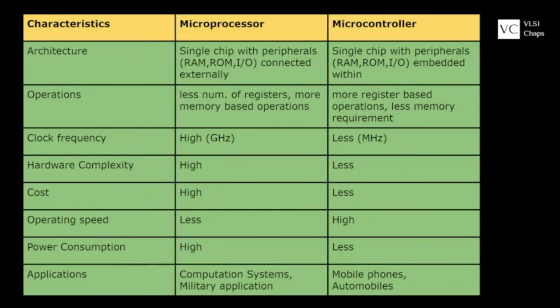To summarize, you can refer to the comparison table on screen, which identifies differences between microprocessors and microcontrollers across various characteristics: architectural difference, operational difference, clock and hardware differences, costing, operating speed, power consumption, and application.